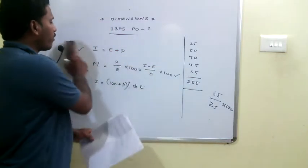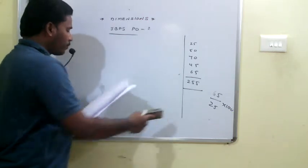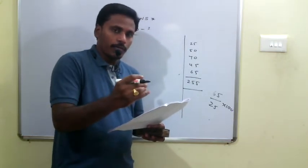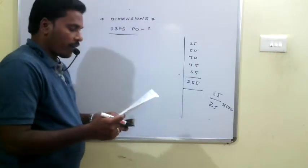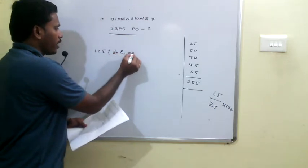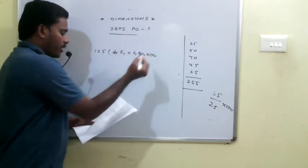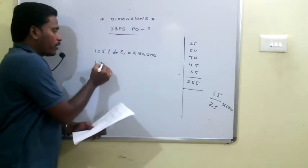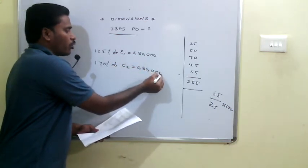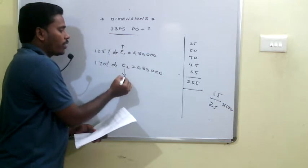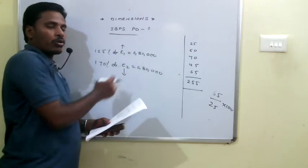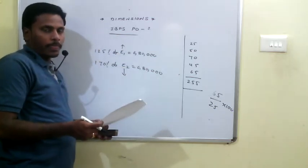Q34: If the income in both 2005 and 2007 was 6,80,000 — in 2005, profit is 25%, so income = 125% of E1, giving E1 = 6,80,000 / 1.25. In 2007, profit is 70%, so income = 170% of E2, giving E2 = 6,80,000 / 1.70. Calculate E1 and E2, then take their difference to find the answer.